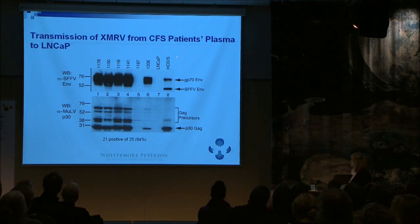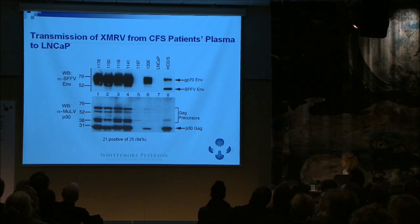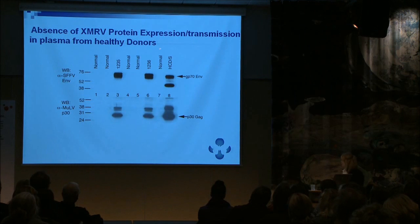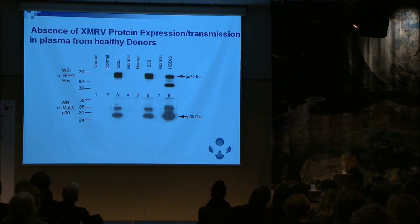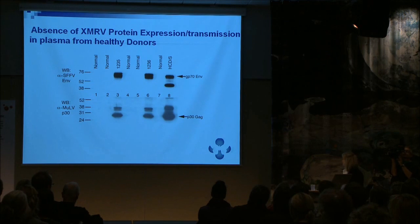We did these studies, showing transmission from CFS patients' plasma into the LNCaP cell line. These are really one-second exposures — Dan Burlett did all of these Westerns, hundreds of them, very quickly. There's a lot of virus in the cell and in the plasma that can be transmitted, and more than 84% were positive when we looked at the PCR negatives in the Science study. Importantly, there was an absence of protein expression or transmission in plasma from healthy donors — essentially only 4%, about 8 out of 218 or 318. It's in the sick people and not in the healthy people, and that's the first step in making a disease association.